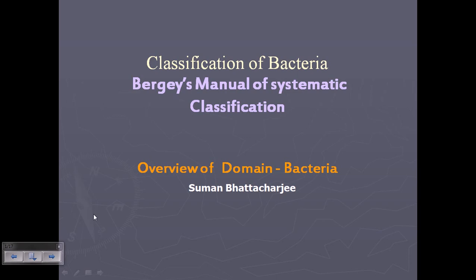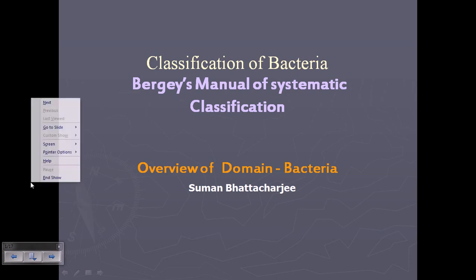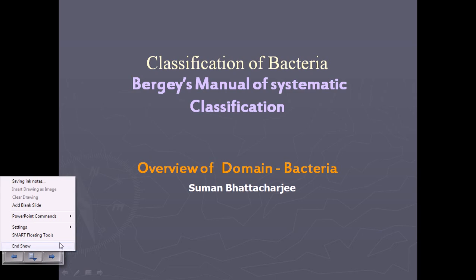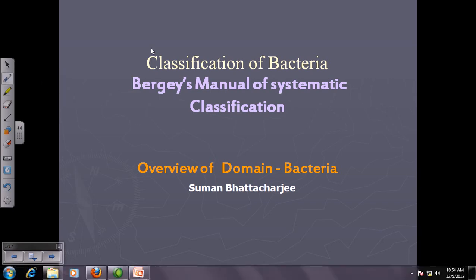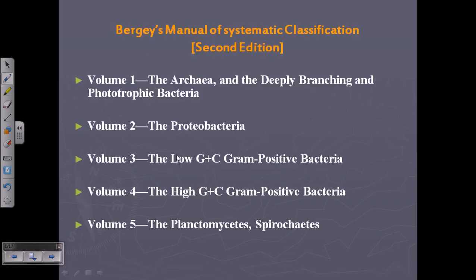In Bergey's Manual of Systematic Classification, we can find information about all those bacteria which have been discovered, identified, and classified throughout time. Now, in the second edition of Bergey's Manual of Systematic Classification, we have five volumes, and those volumes contain different types of bacteria with different types of characteristics.